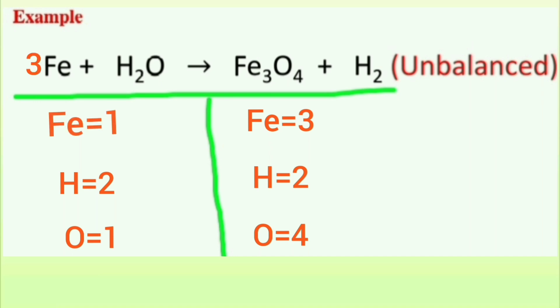We can put three on the reactant side, and one times three which is three iron on both sides. But oxygen on reactant side is one and product side is four. We can put four on reactant side, one times four which is four.